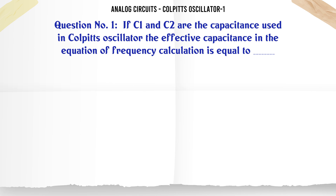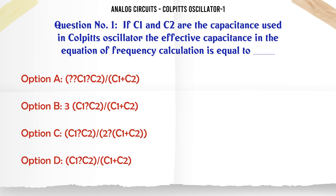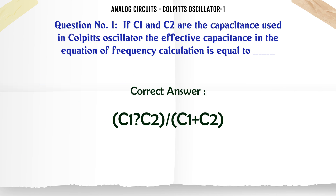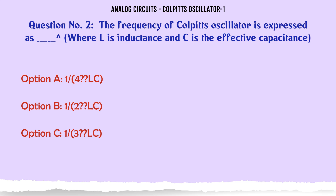If C1 and C2 are the capacitances used in Colpitt's oscillator, the effective capacitance in the equation of frequency calculation is equal to: A) C1·C2 / (C1+C2), B) 3·C1·C2 / (C1+C2), C) C1·C2 / (2·C1+C2), D) C1·C2 / (C1+C2). The correct answer is C1·C2 / (C1+C2).